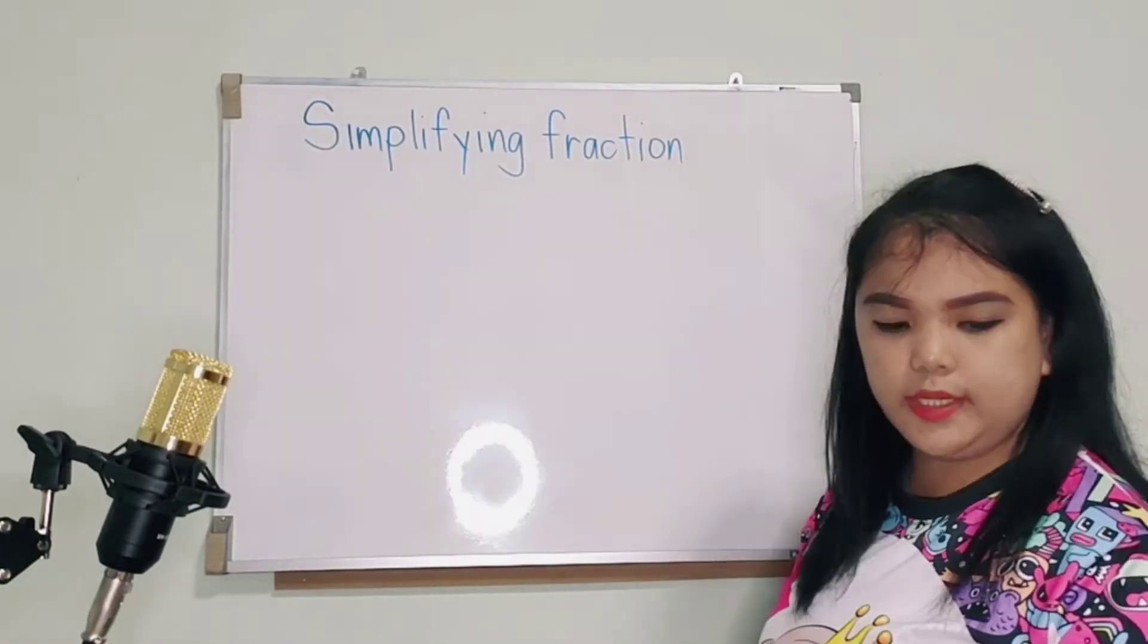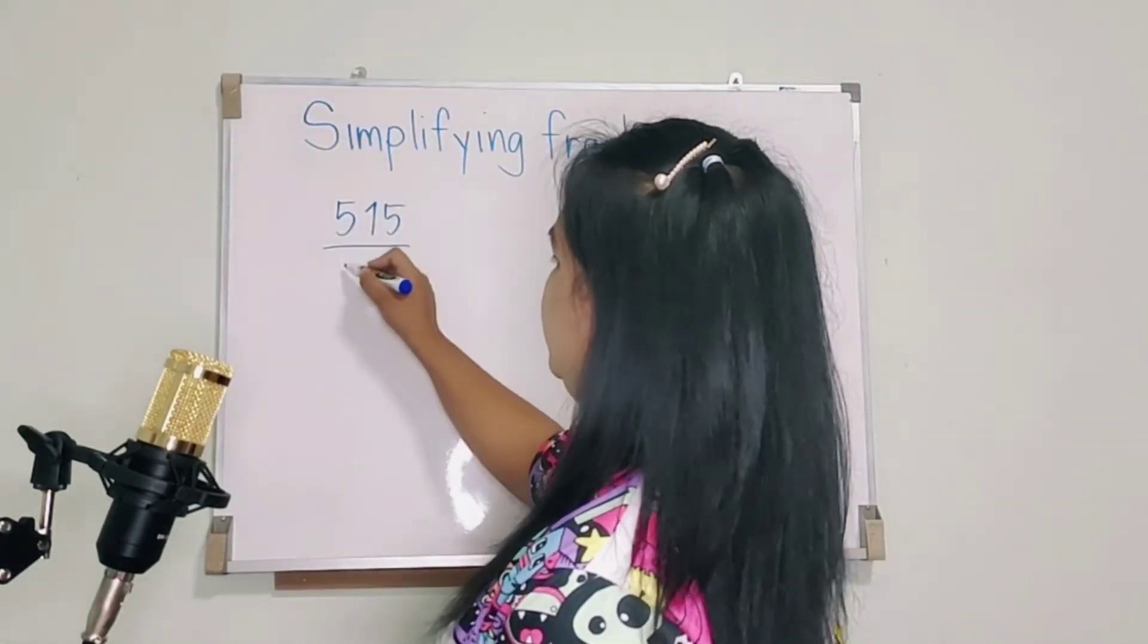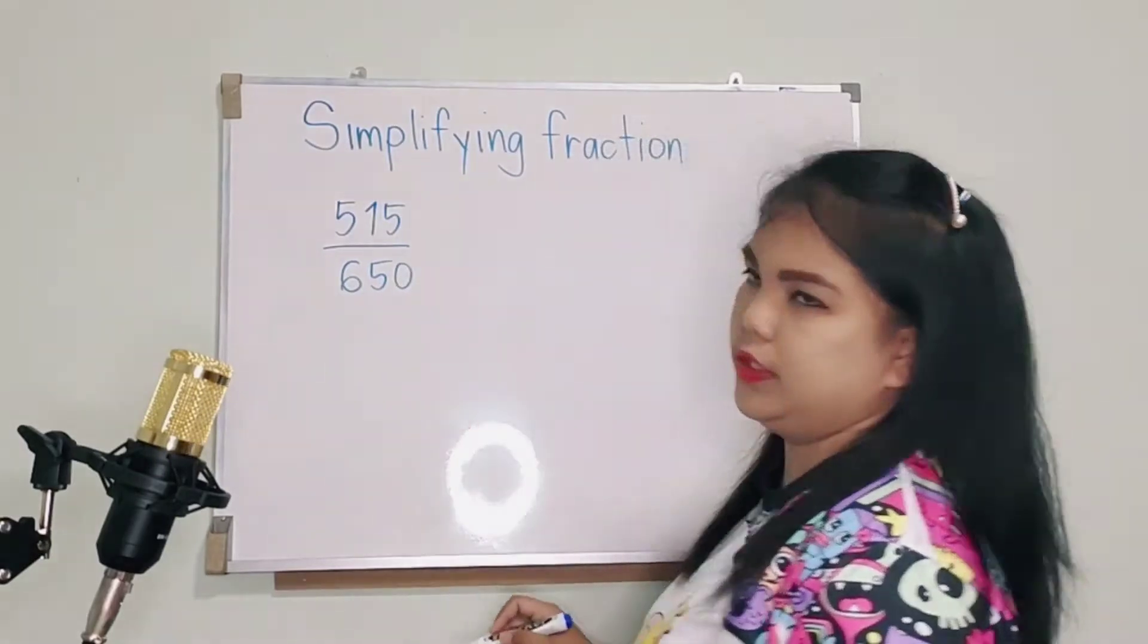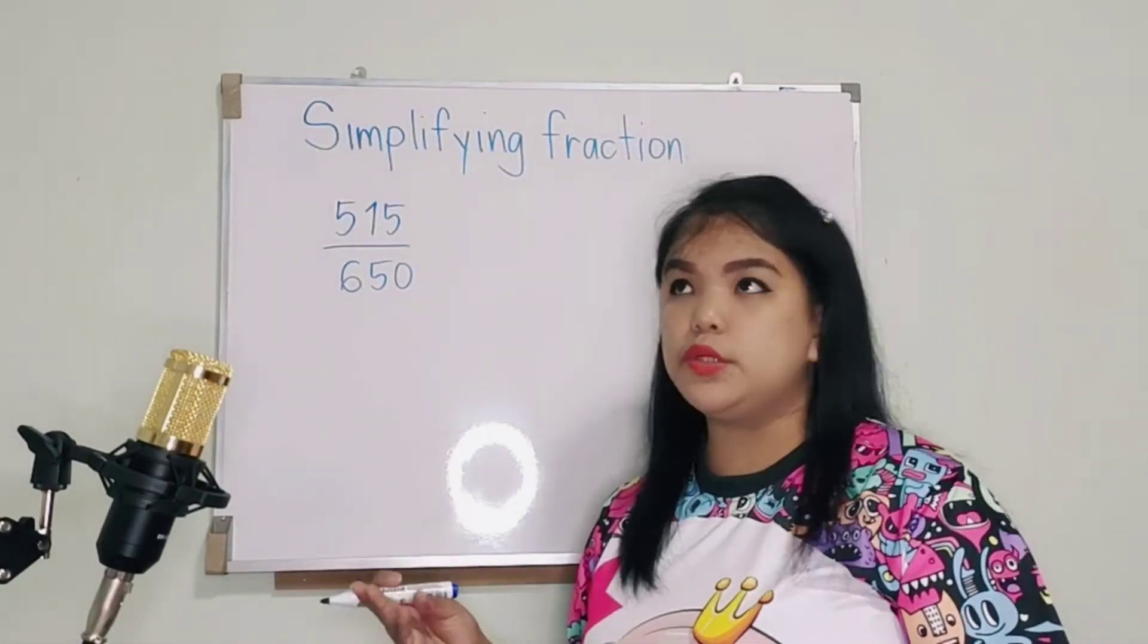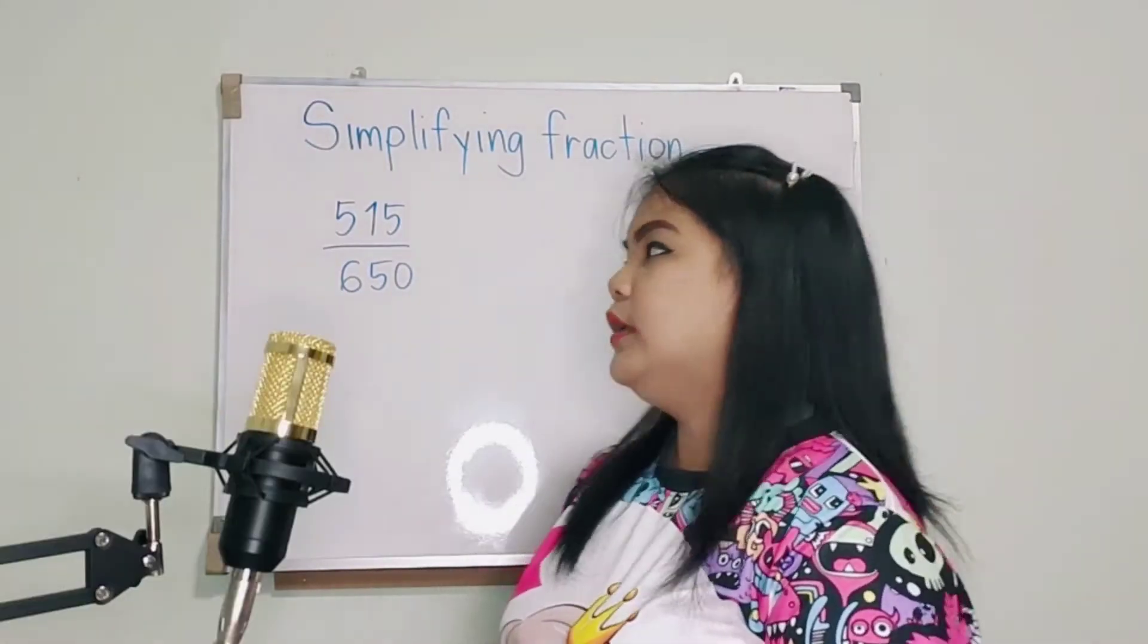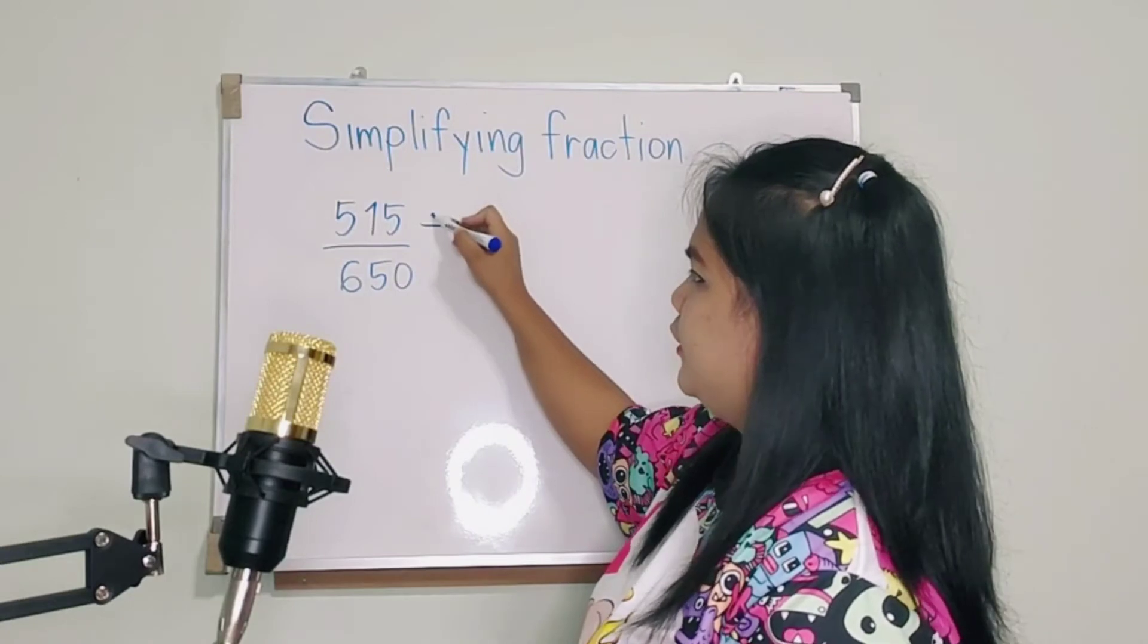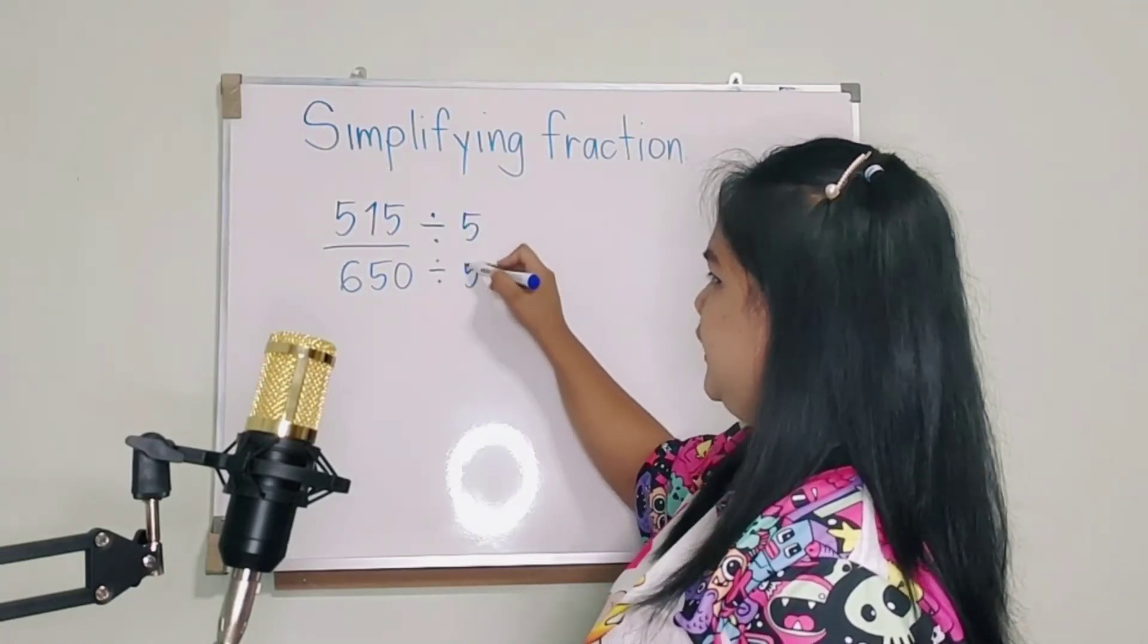So another one. Example, we have 515 over 650. Okay? So how to simplify this number? So you can choose the smallest divisible number. So I will use 5 first. Okay? I will use 5 both sides. And divide it.